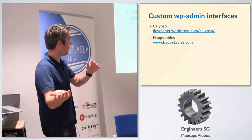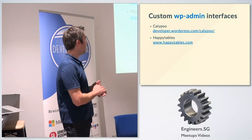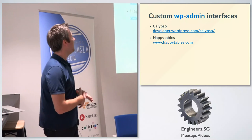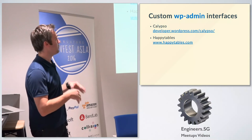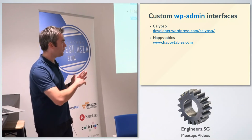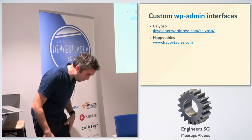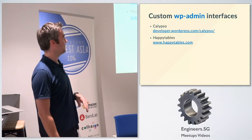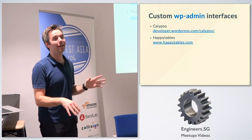We've done this on WordPress.com — if you have a website there, you'll notice the dashboard you see is not wp-admin. That's a project called Calypso, built with React and other JavaScript libraries. It allows Automattic to tailor the experience for WordPress.com users.